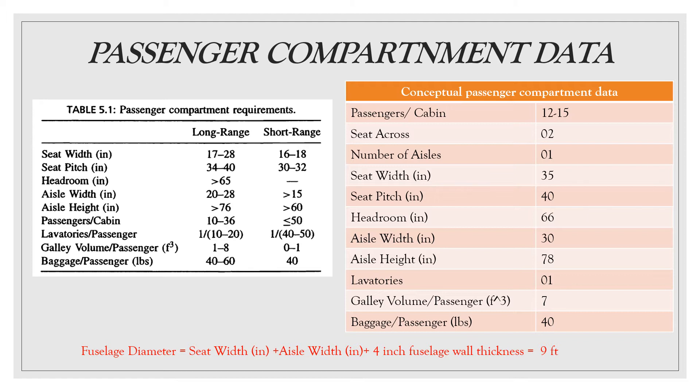Based on the guidelines for passenger comfort requirements as in the table, the proposed seating arrangement for conceptual data is for a normal subsonic business jet aircraft. This arrangement is equivalent to first class seating on a commercial passenger aircraft. The diameter of the fuselage is based on the sum of seat and aisle width plus a 4 inch fuselage wall thickness, which is common for any type of aircraft. This gives us a fuselage diameter of 9 feet.